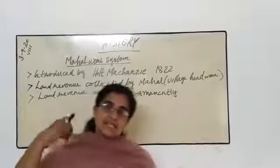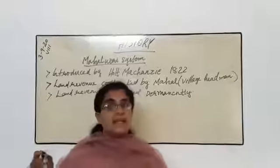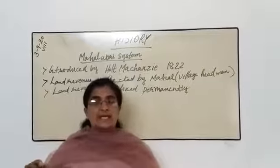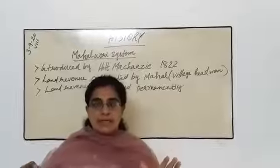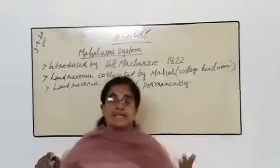In your previous class we learned permanent settlement in 1793. By the early 19th century many of the company officials were convinced that the permanent settlement system had to be changed, again because to get maximum profit.